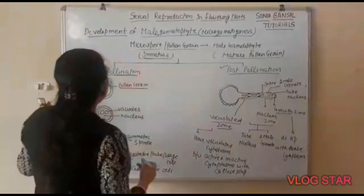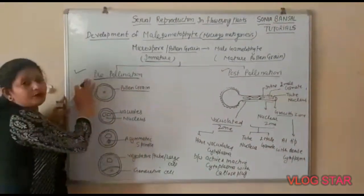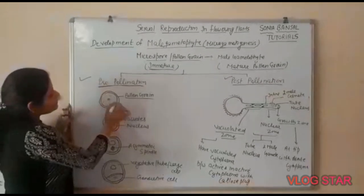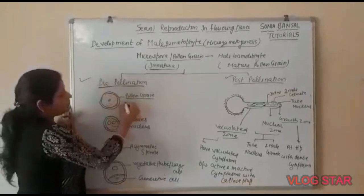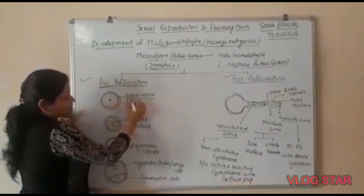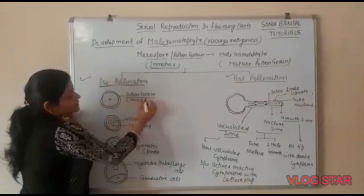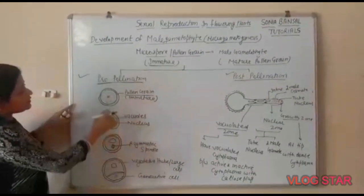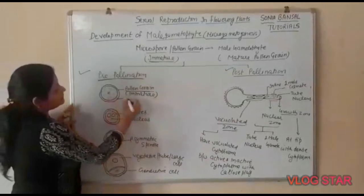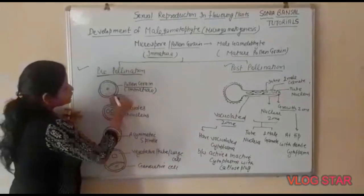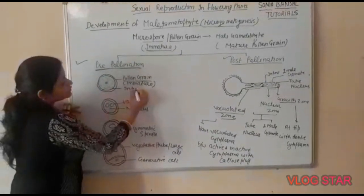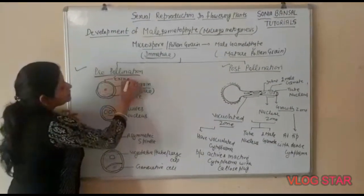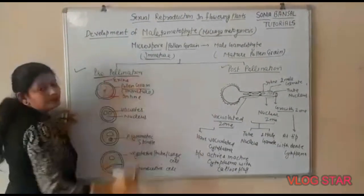Before pollination, the pollen grain is in an immature condition. It undergoes the process of maturation. The pollen grain has an inner layer called intine and an outer layer called exine, and a simply placed nucleus.